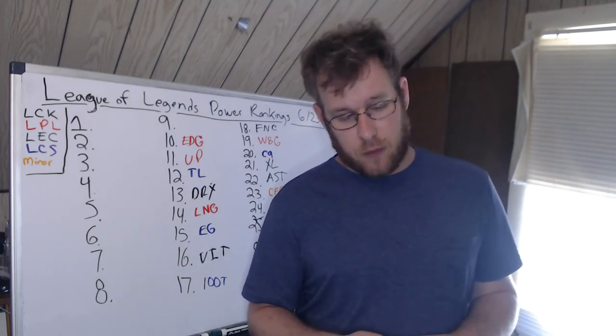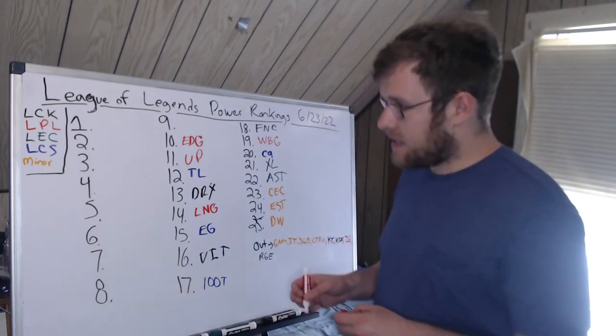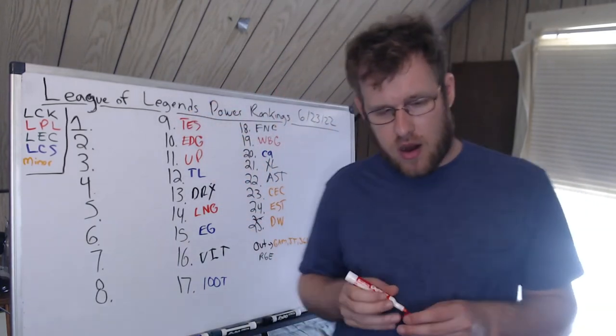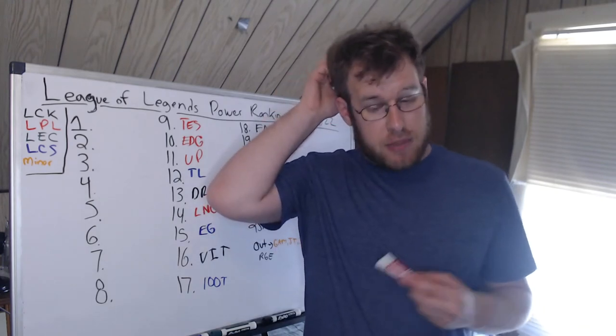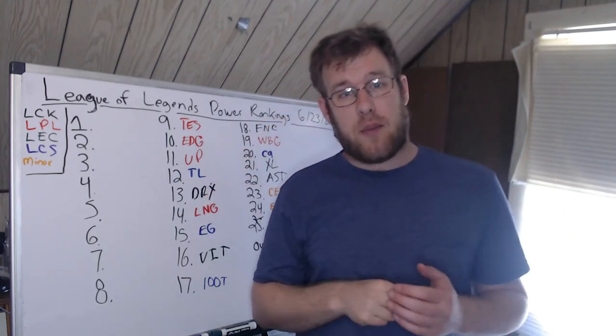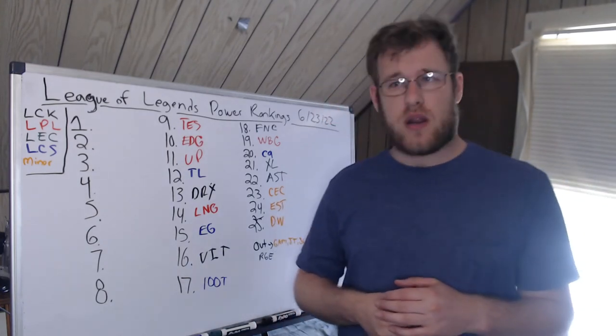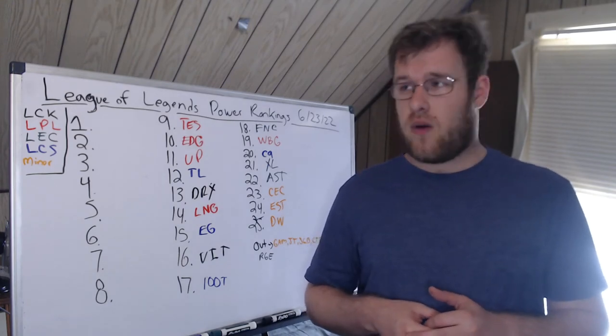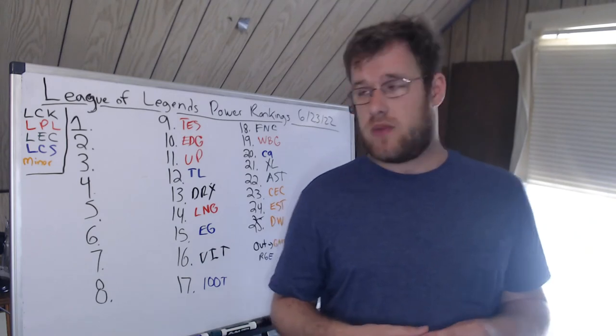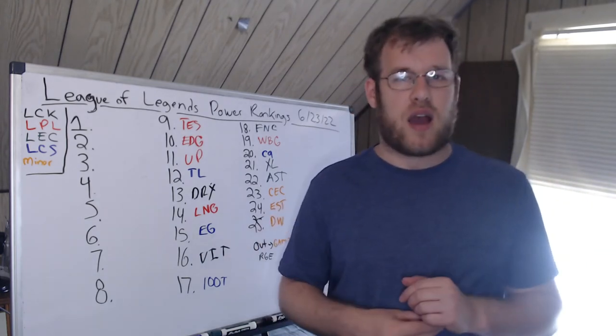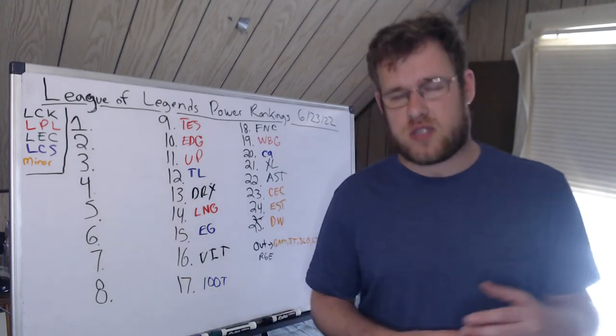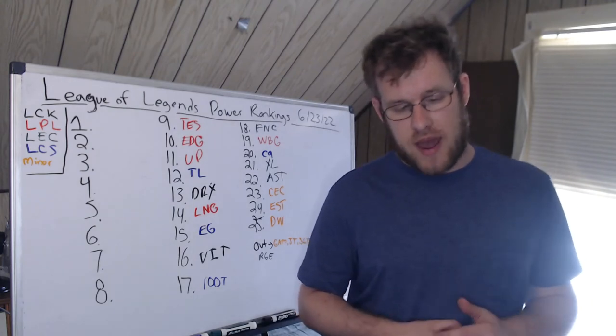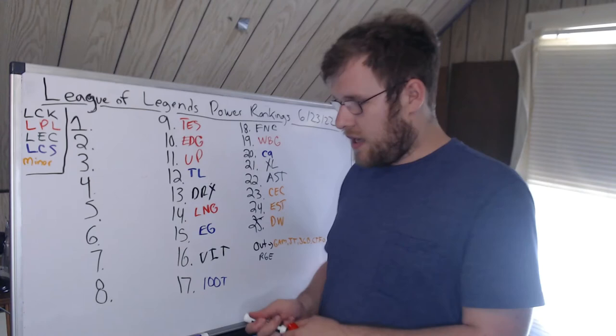In ninth place, we have TES. TES are going up one spot. They beat IG and BLG, continue to win. Knight looked good. Wayward is kind of iffy. I don't think Wayward really stuck out. Tian did really well on the Viego. JackeyLove looked okay and pretty good. So TES are kind of where they've been all year long—playoffs in spring they looked really good and towards the end of spring, but for a large portion of spring they were in the middle, so for them to be ninth, I'm not surprised.